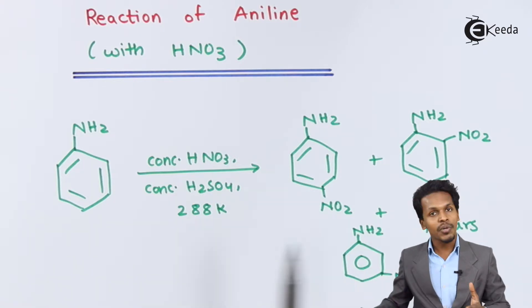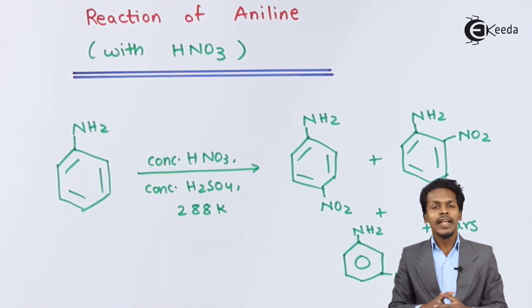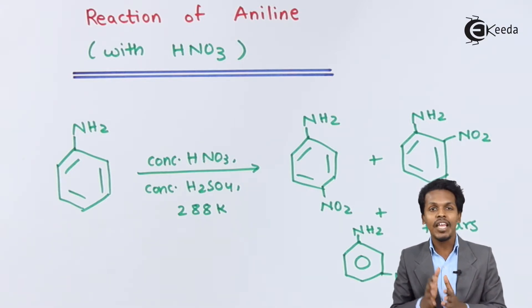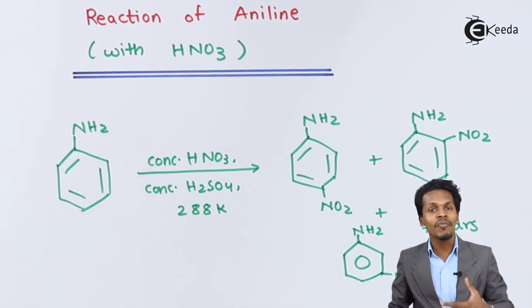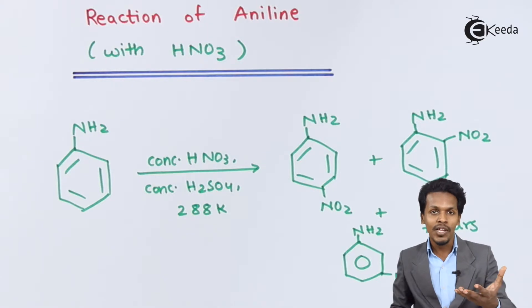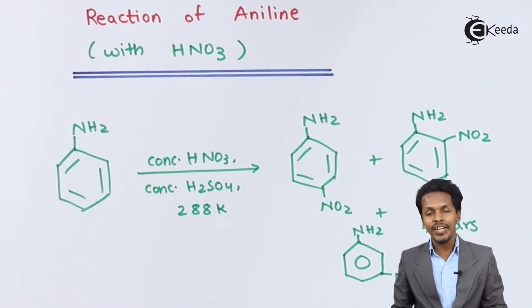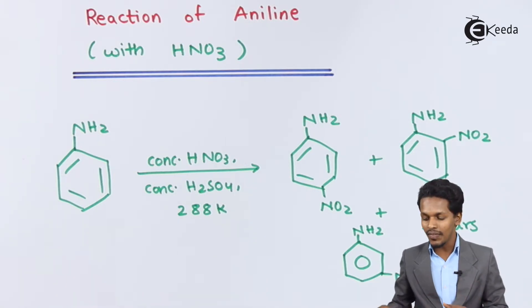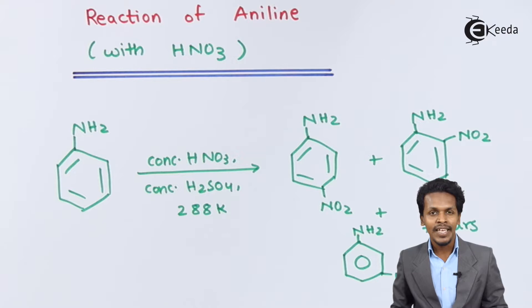Since we get a mixture of compounds, it is very difficult to extract all these products at once. So if we need a mono derivative, we have to protect the NH2 group with some other group. For that, we use the same process as in the previous lecture — we convert the NH2 group into an acetamido group.